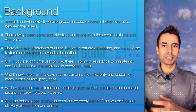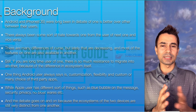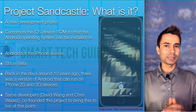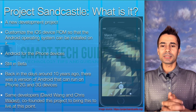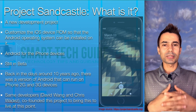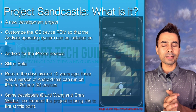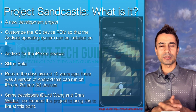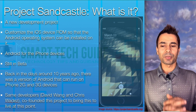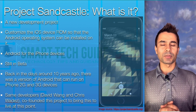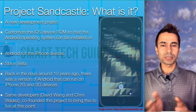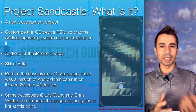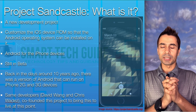If you are in one ecosystem, it's really difficult to migrate to another because of the user interface and everything. So let's look at Project Sandcastle — what is it? This is a new development project that lets you actually use Android on iPhone devices. It works by customizing the Apple file system and the ROM of the Apple device so that you can install the Android OS on that device. It's still in beta and early for day-to-day usage, but you can test it out.